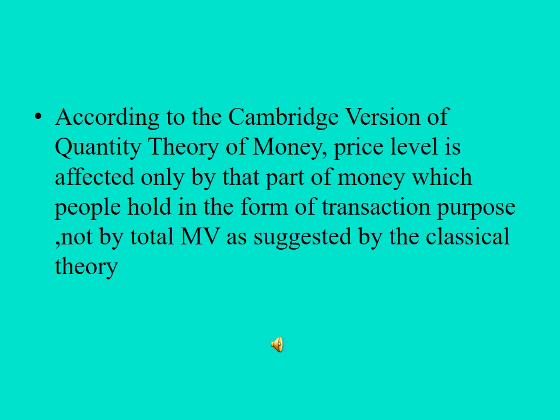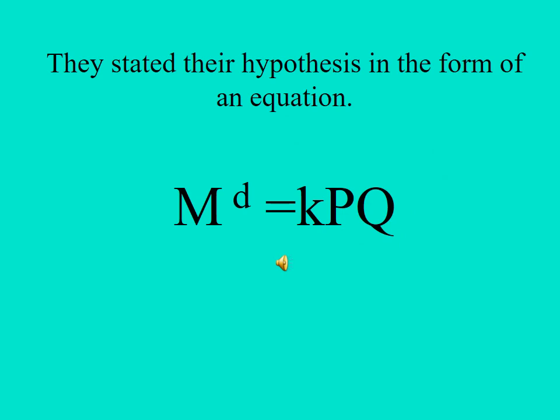According to the Cambridge version, the price level is affected only by that part of money which people hold for transaction purposes, and not by the total money supply as suggested by the classical theorists. The Cambridge equation is: Md = KPQ.